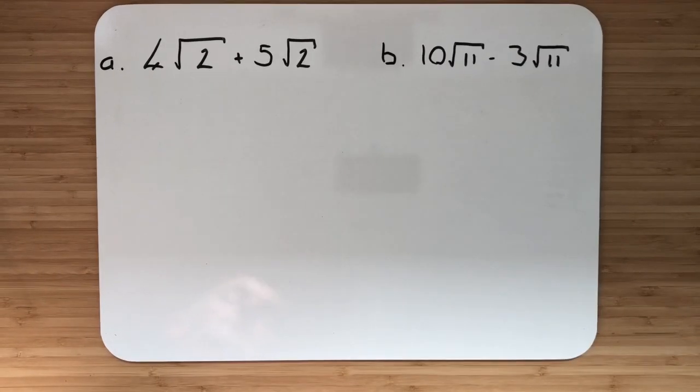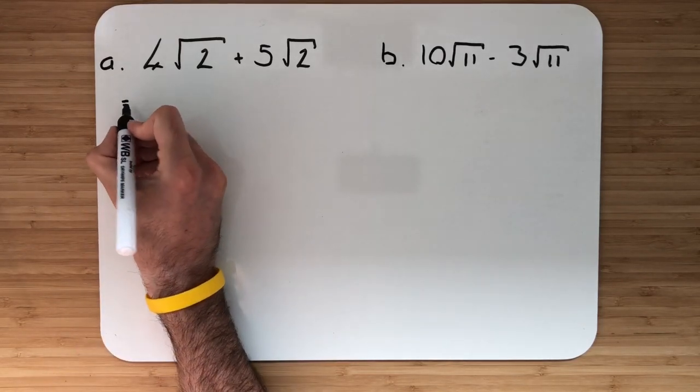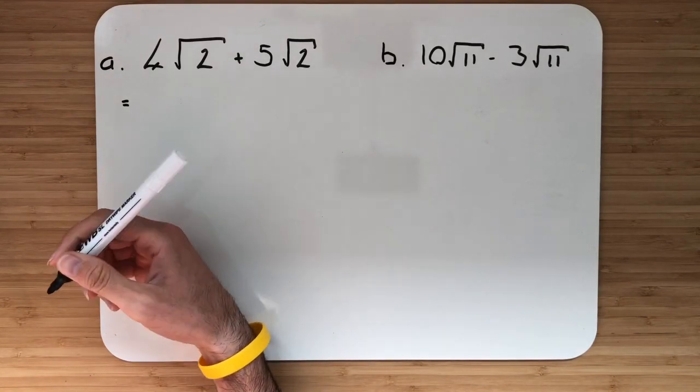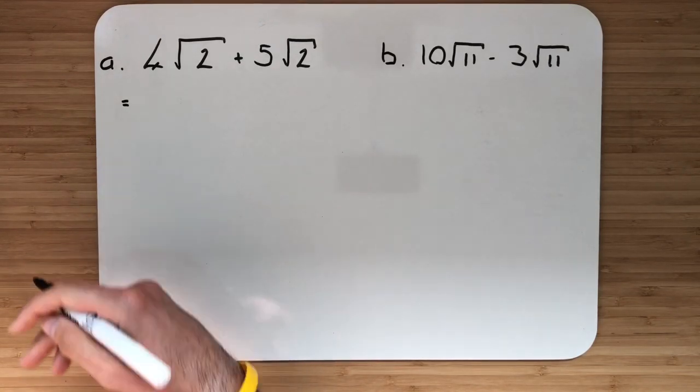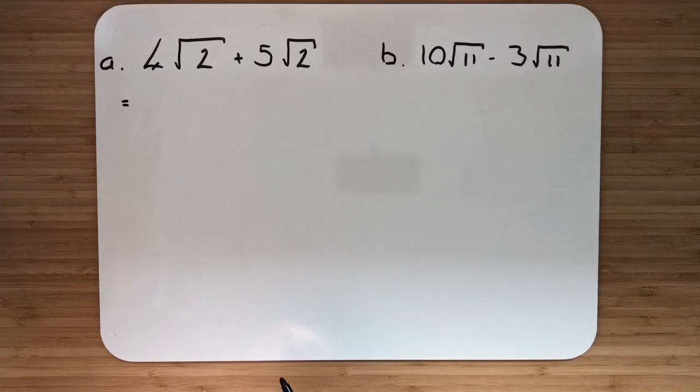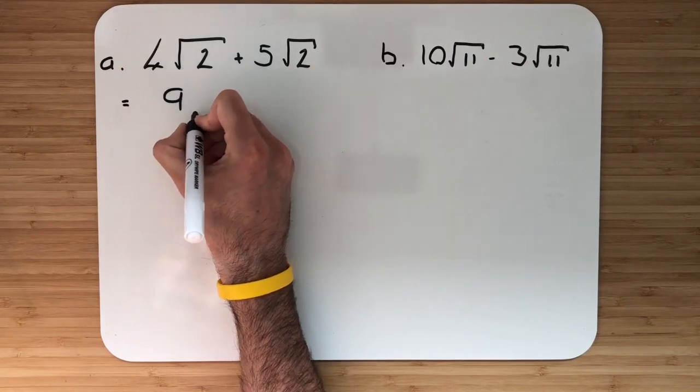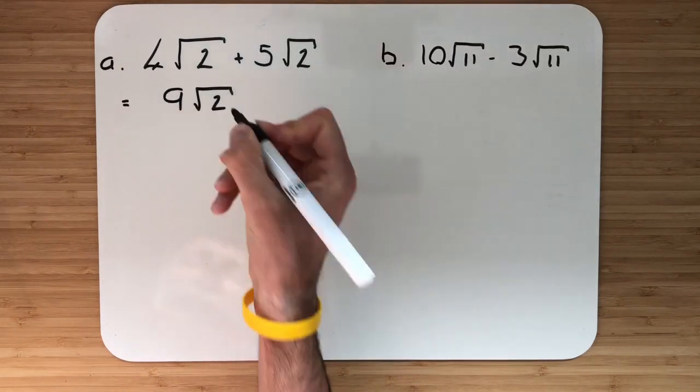In our first example here we are trying to simplify down surds. Now we treat this very similar to the way we would do algebraic expressions, don't make it any harder. If we look at example A, we have 4√2 add 5√2. So if you just imagine you get 4 root 2's in one hand, then you get 5 root 2's in another hand. If we join them together we simply have 9√2.